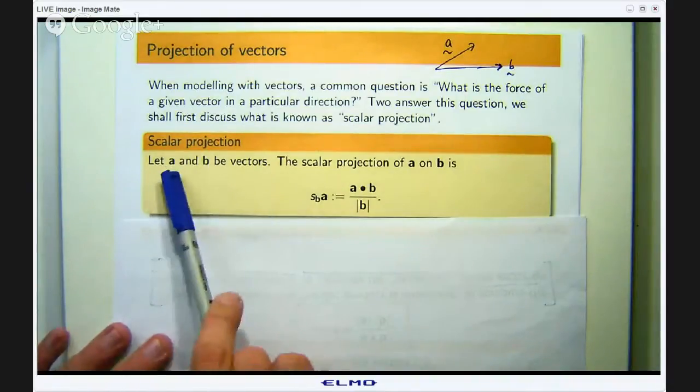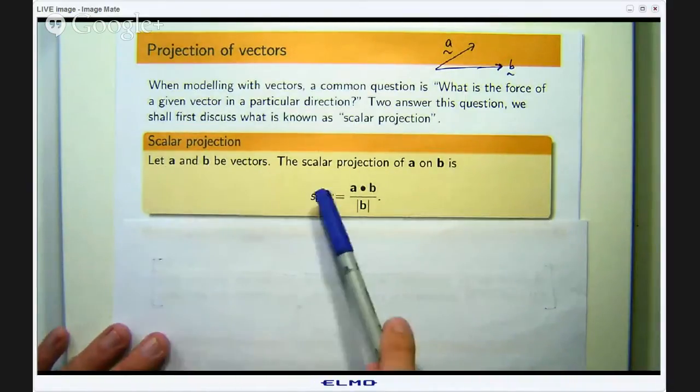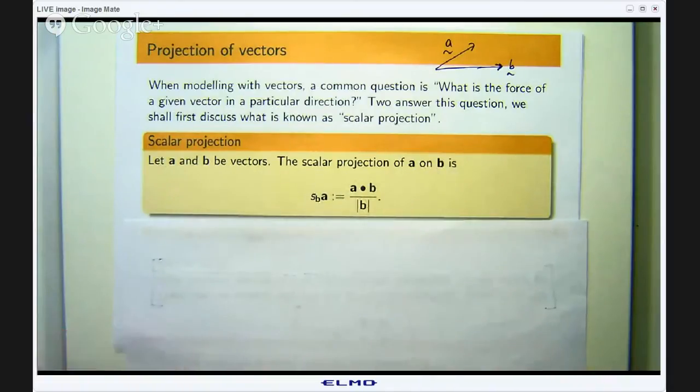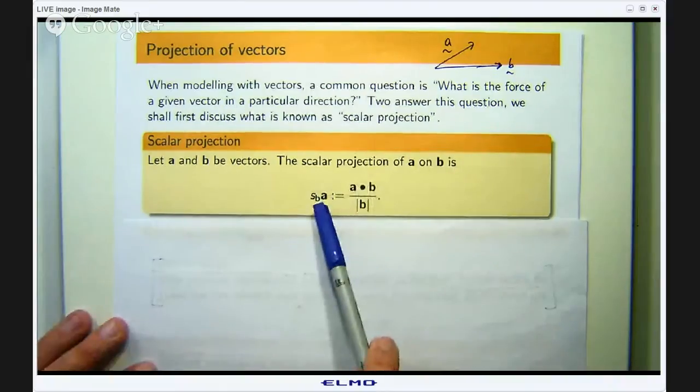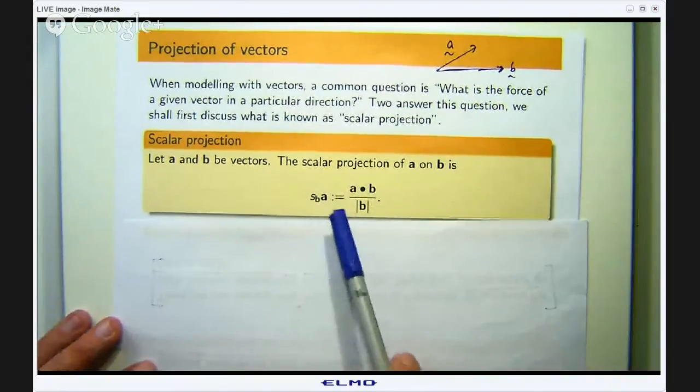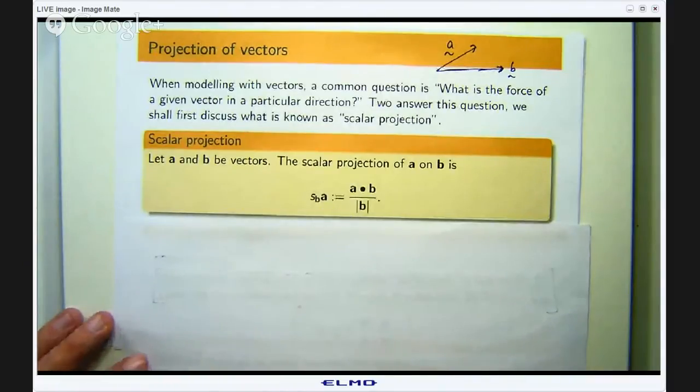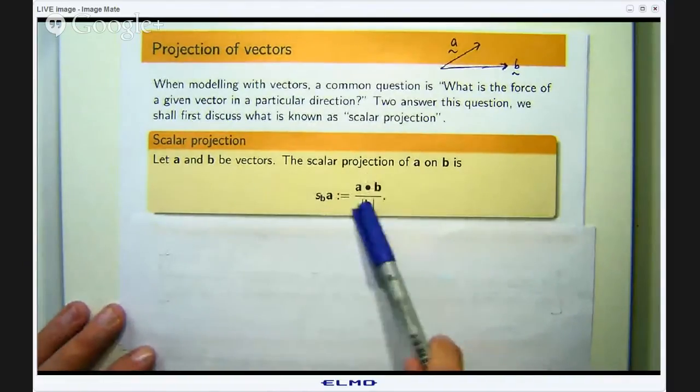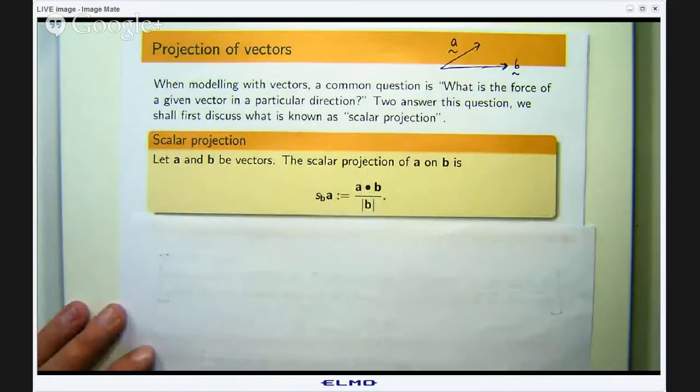So let a and b be vectors. We define the scalar projection of a vector a onto another vector b, denoted by this symbol. It is the dot product of the two vectors divided by the length of b.